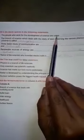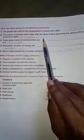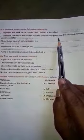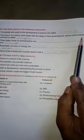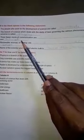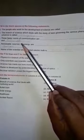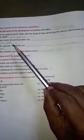The branch of science which deals with the study of laws governing various phenomena in the universe is called physics. Three faster modes of communication are TV, telephone, and internet.